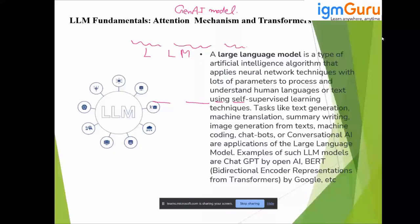The kinds of tasks we can implement using LLMs include text generation — as seen in ChatGPT, which generates a response based on input — as well as summary writing, image generation from text as seen in Bing, code generation, and conversational AI, also called a conversational layer AI.